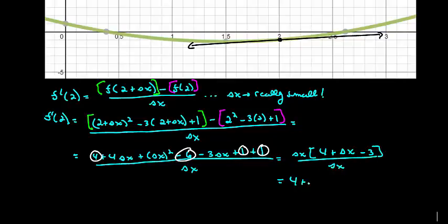We're left with (4 + Δx - 3) / Δx, which is equal to 4 + Δx - 3. As Δx becomes really small, this becomes 4 - 3, which is 1.